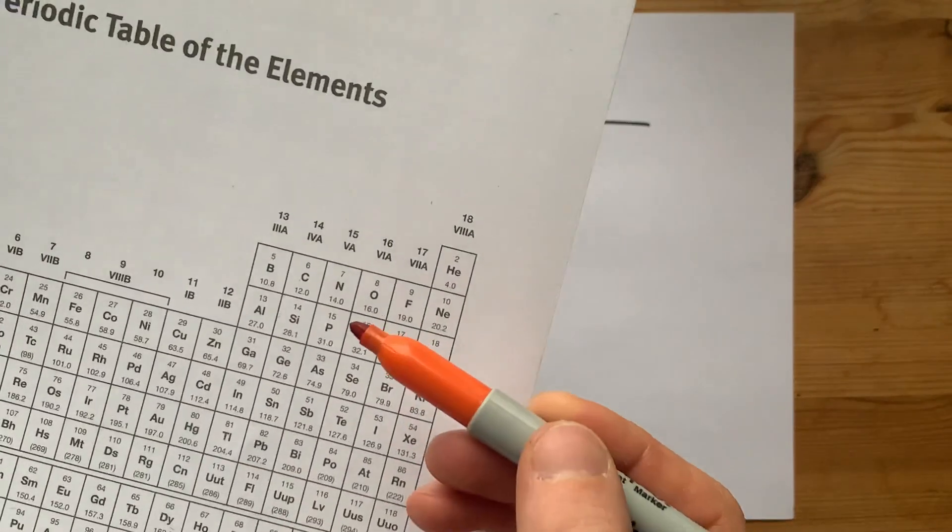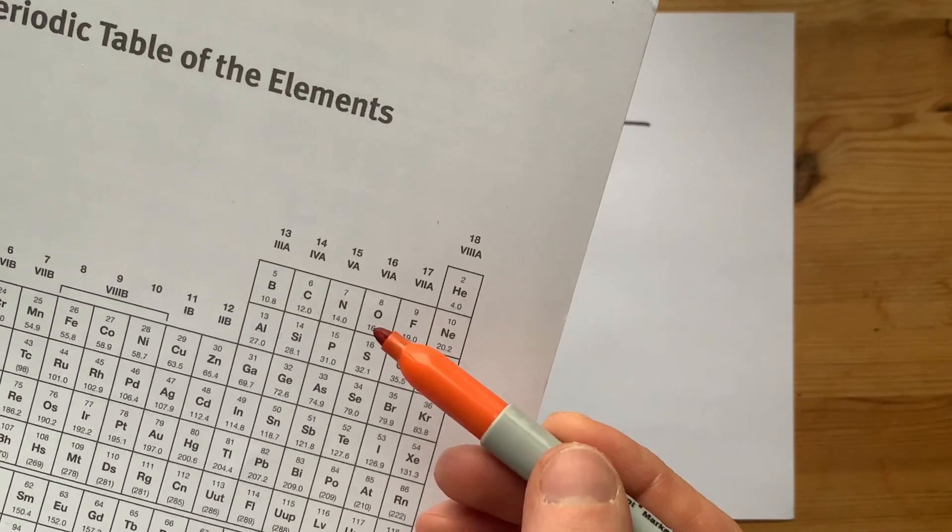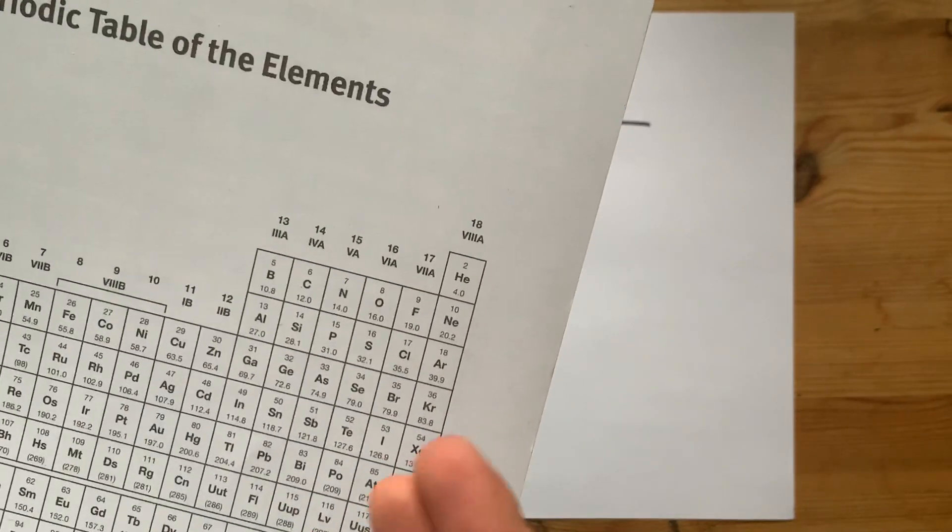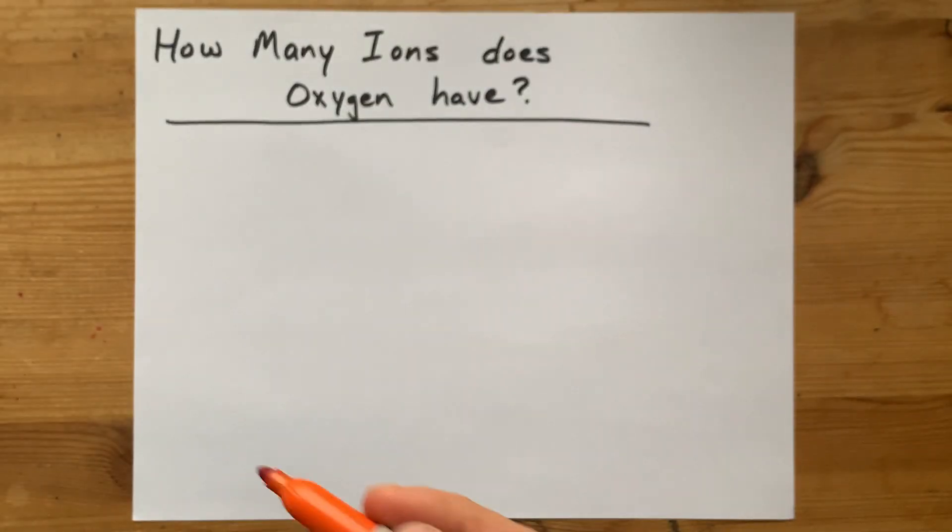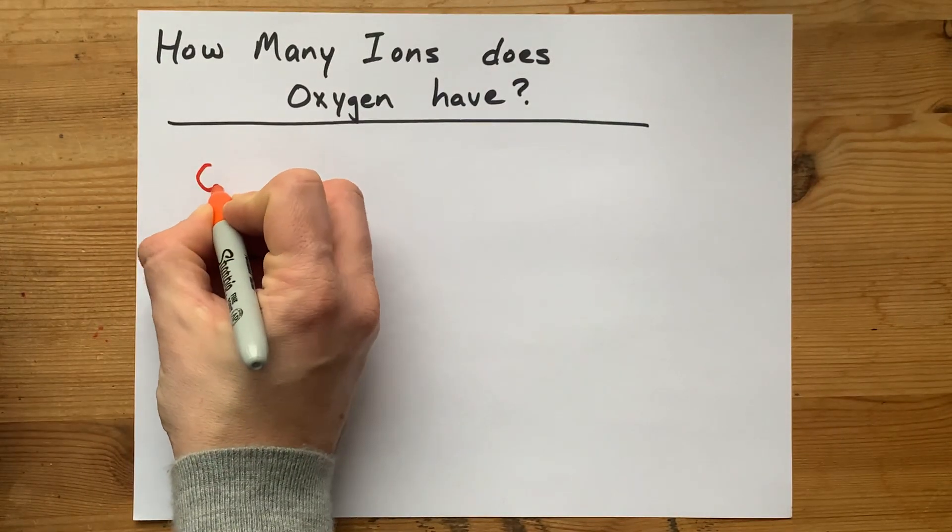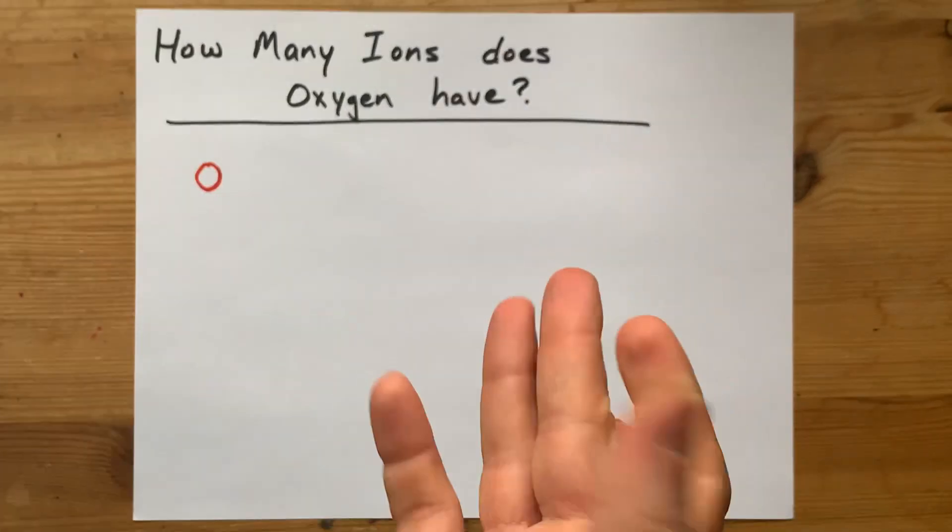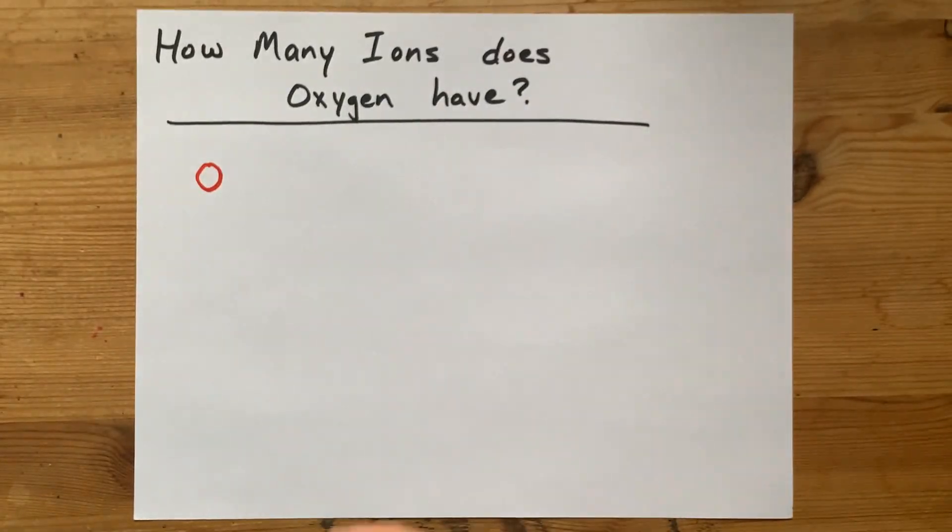By far, the most common ion of oxygen is the one that makes it isoelectronic with neon, having a noble gas configuration. Oxygen itself, as a neutral atom, is just two electrons shy of being isoelectronic with a noble gas.